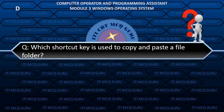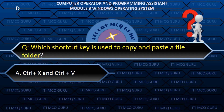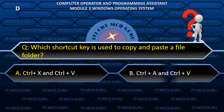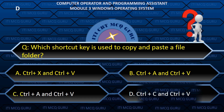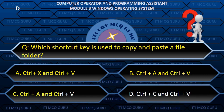Which shortcut key is used to copy and paste a file or folder? D. Ctrl+C and Ctrl+V.